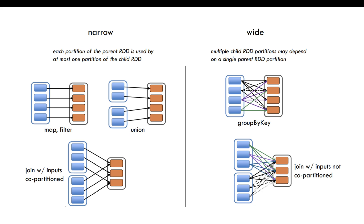Here is another diagrammatic representation of narrow and wide transformations. Map or filter can be applied on one partition itself - they are narrow. Union also will not do any shuffling between partitions, so union is a narrow transformation. When you talk about wide transformation - group by key, for example - the data is present in, say, four partitions. To do a group by key, it has to read data from all four partitions, and there is a shuffle happening. That is why group by key is a wide transformation.